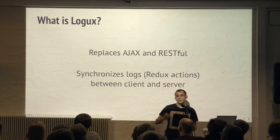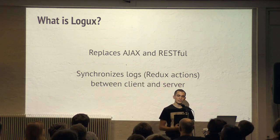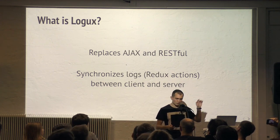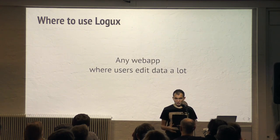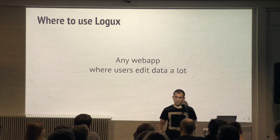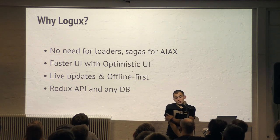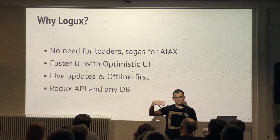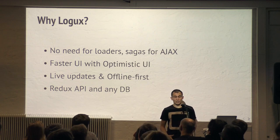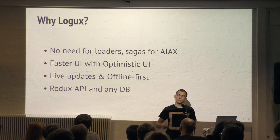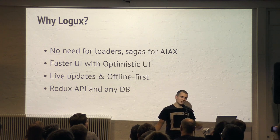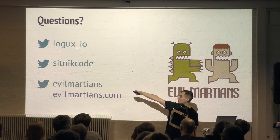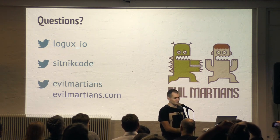So, Logux. It's a thing to replace AJAX requests and REST, replacing them with a different idea where you have a log and you put each action in this log and forget about it. Logux will synchronize it in the background — you should not care about it. You can use it for any web application — not just special real-time applications like chat, but for any application where you have a form and brave managers. Why? Because you will reduce a lot of code. You just put an action in the log and forget about it — you don't need sagas, you don't need all the creepy Redux middleware. Your interface becomes faster because you don't need loaders, and the user will not see them — everything will be much faster because of optimistic UI. And of course, live updates out of the box, offline-first, Redux API — all this stuff. Ask me questions at the break. This is the Twitter of Logux, this is my Twitter, and my company Twitter. That's all.